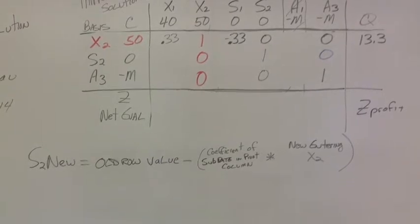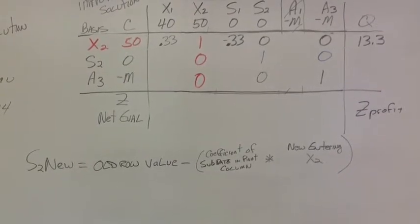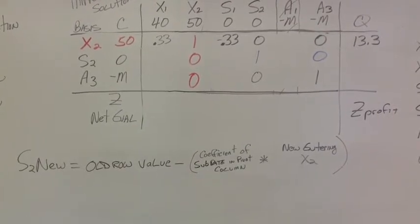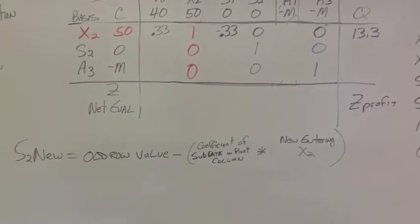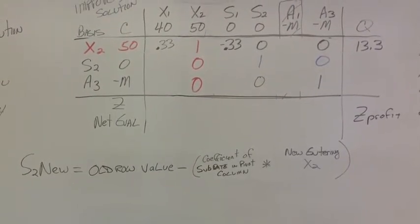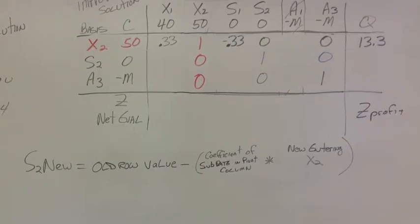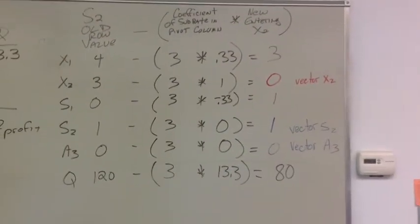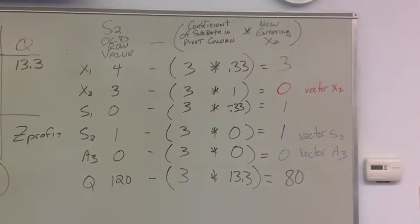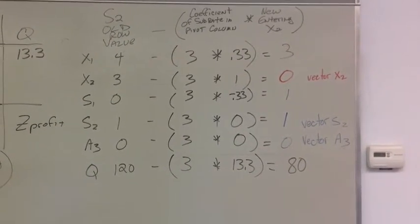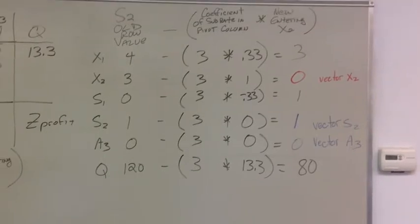To calculate the new s2 value, we take the old row value, we subtract the coefficient of the subrate in the pivot column, or the old where s2 x2 lined up, times the value of the new entering. To give you an idea of what that looks like, I've done it out over here. Where I've done it, the book does it horizontally, I do it vertically. You can do it either way, it doesn't really matter. I find mathematics is easy for me.